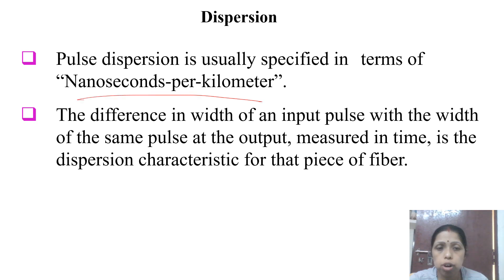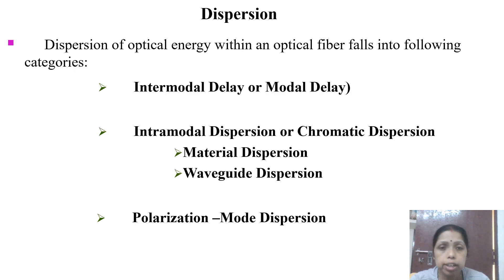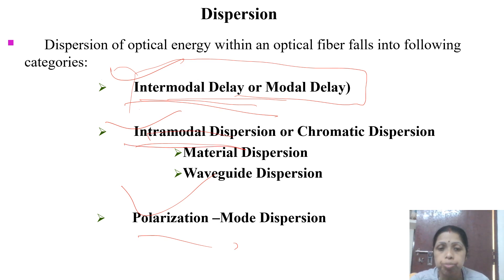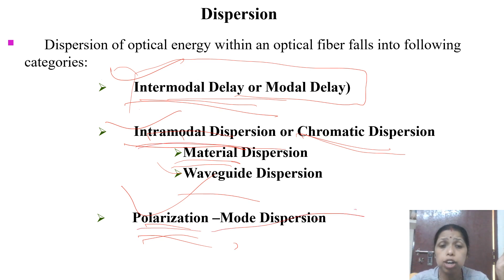Dispersion can be measured in nanoseconds per kilometer. There are three types of dispersion: intermodal dispersion, intramodal dispersion, and polarization mode dispersion. Intermodal dispersion, also called modal delay dispersion, normally happens in multimode fiber. Intramodal dispersion is also known as chromatic dispersion, and it can be divided into material dispersion and waveguide dispersion. Polarization mode dispersion happens inside single-mode fiber.